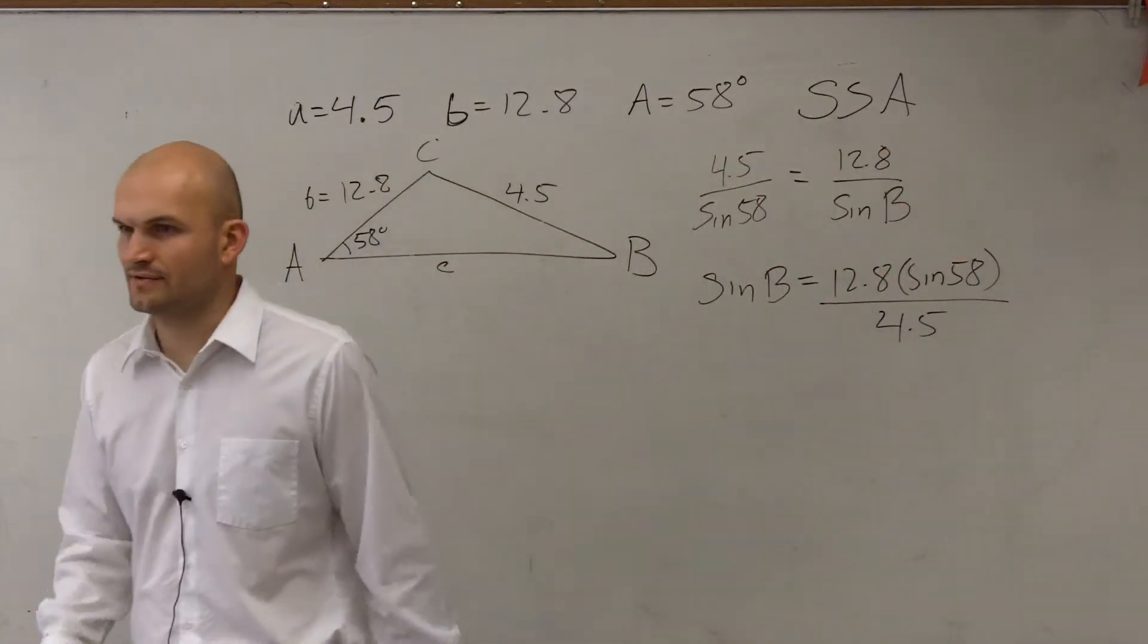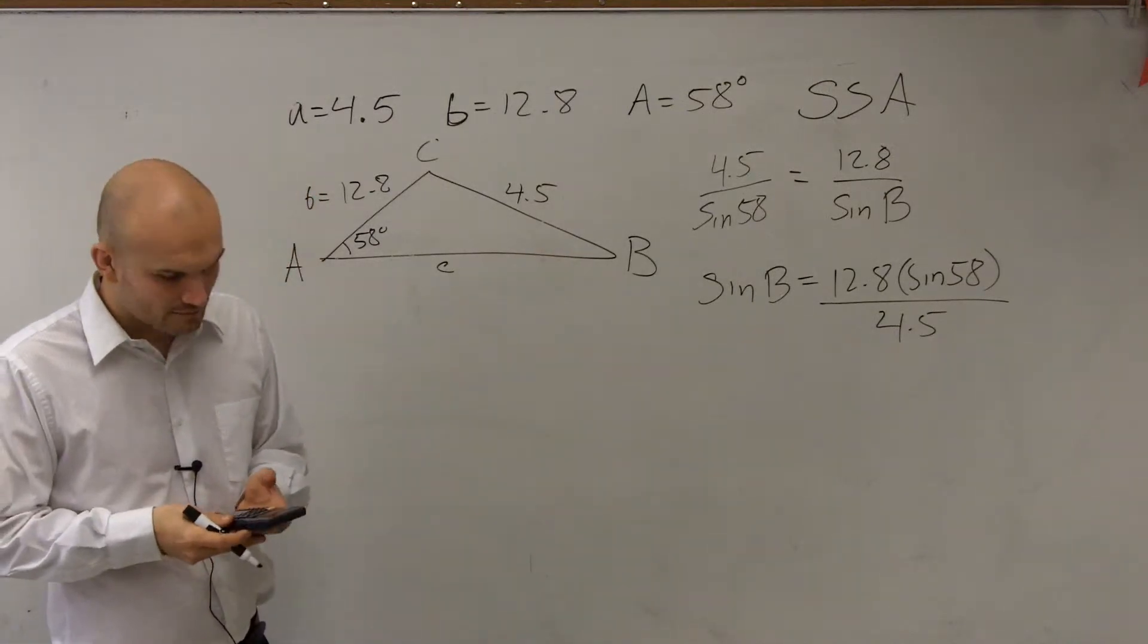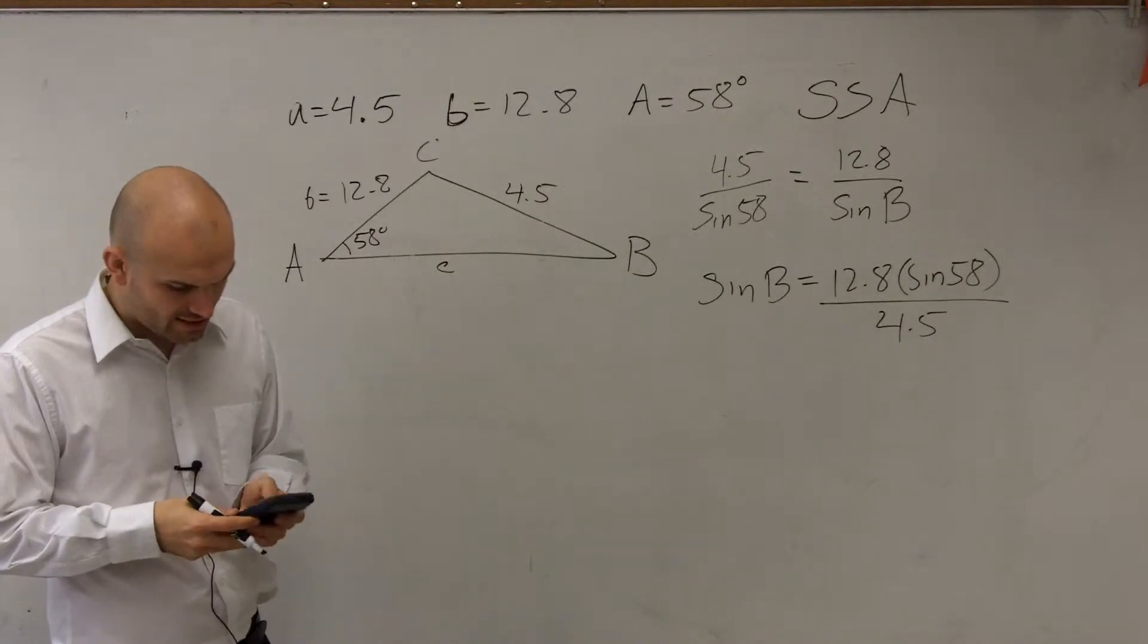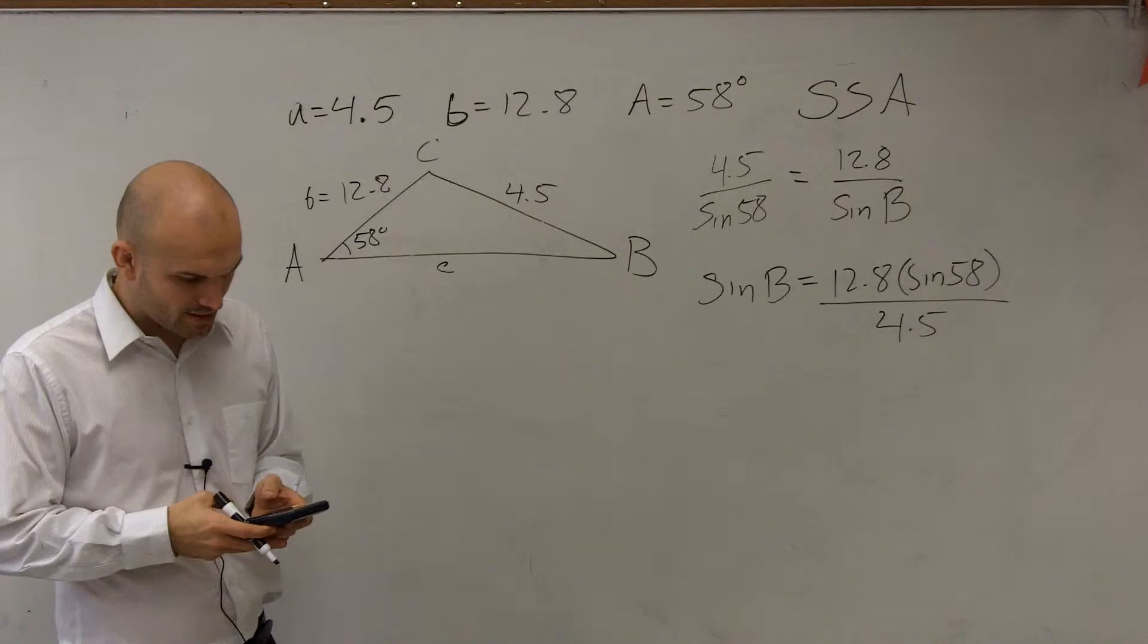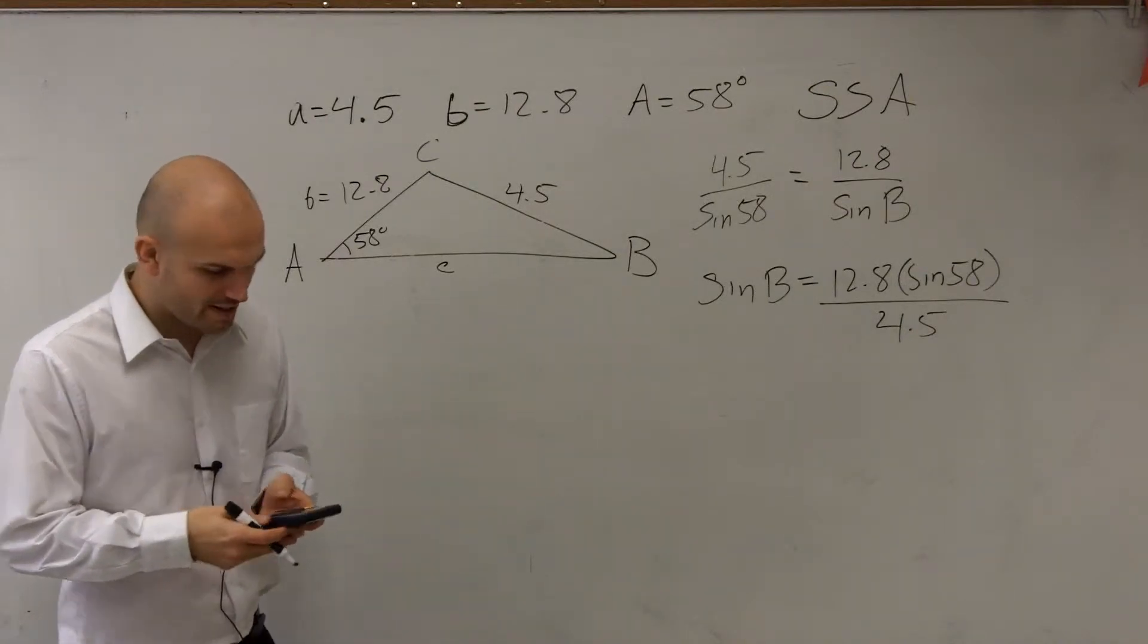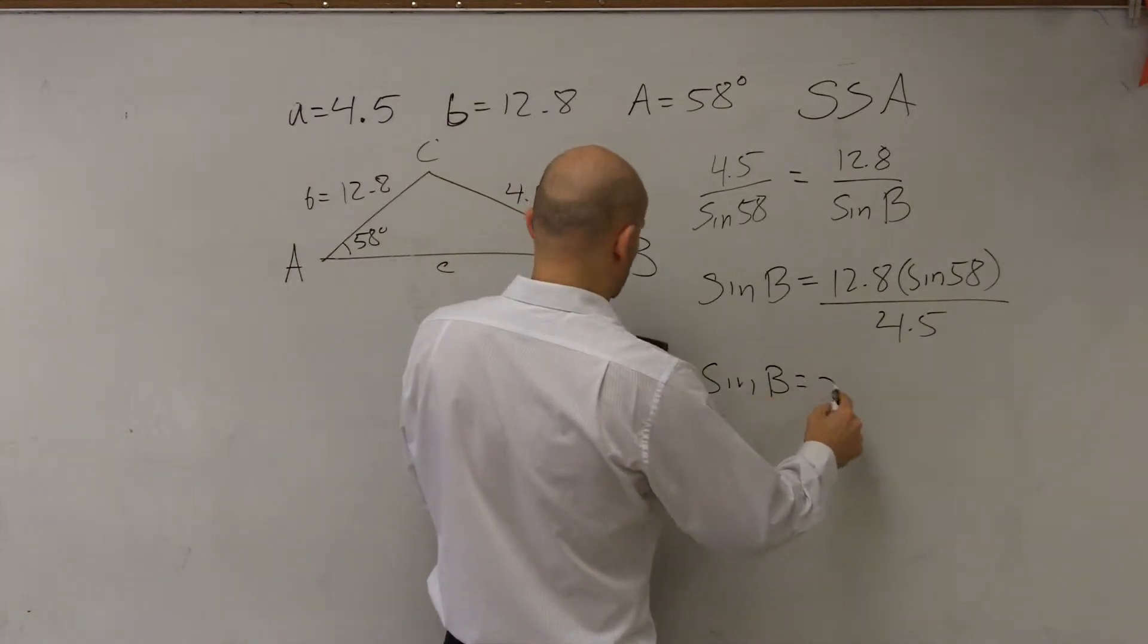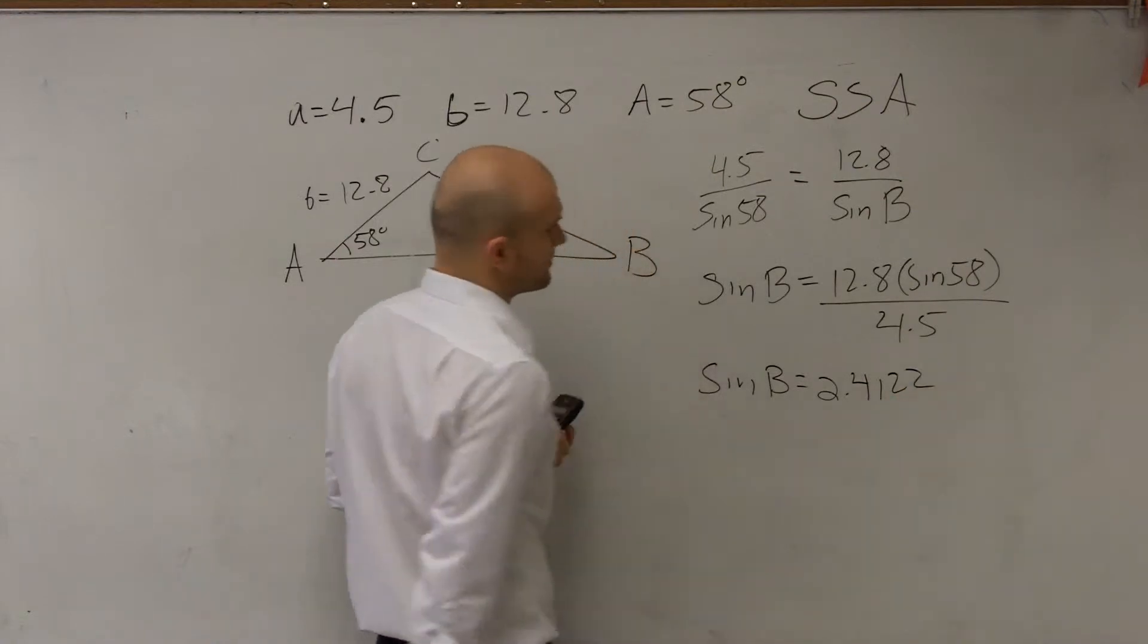You guys understand how I just kind of did a couple of steps all in themselves. So now let's go and figure out what we're going to have. So I do 58 sine times 12.8 and that gives me 10.85 divided by 4.5. And that gives me the sine of B equals 2.4122.